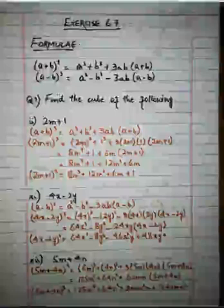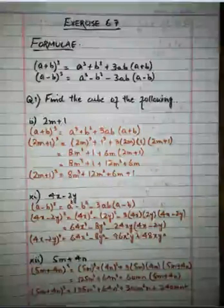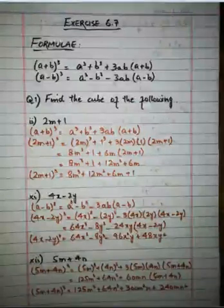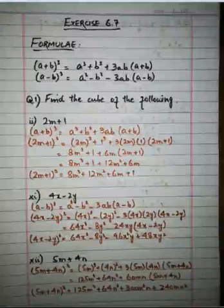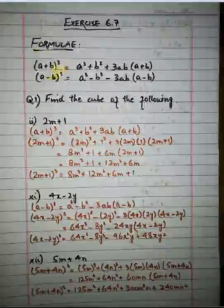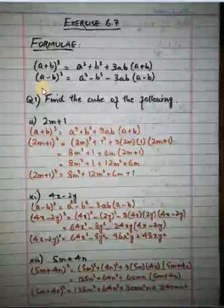Now it's time to do exercise 6.7. In this exercise the formulae used are: a plus b whole cube is equal to a cube plus b cube plus 3ab into a plus b, and a minus b whole cube is equal to a cube minus b cube minus 3ab into a minus b. Now how to apply these formulae? Look at the left hand side of the formulae — it is the cube of an expression containing two terms, a plus b, and whole cube. It means the cube of the sum of two numbers or expressions, overall an algebraic expression containing two terms.